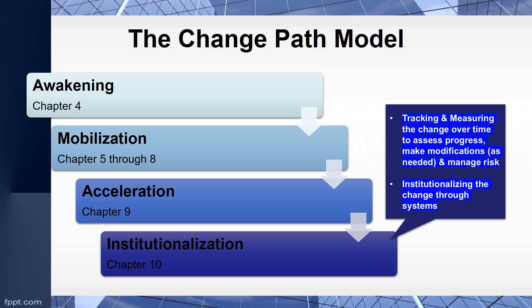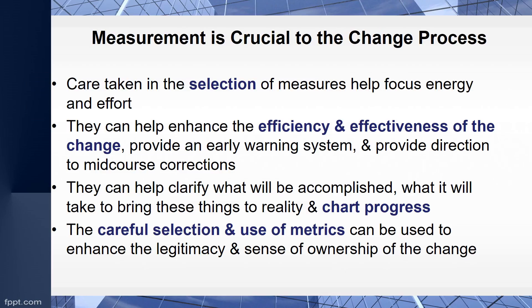Then we move to institutionalizing the change through systems, and this is where Lewin talks about refreezing. The final step focuses on tracking, measurement, and the controls that are in place to allow for necessary changes and to minimize risk in the process. We measure change by designing effective control systems, tracking and measuring the change over time to assess progress and make modifications as needed, to ensure minimal risk throughout the change process. The measurement is crucial to the change process.